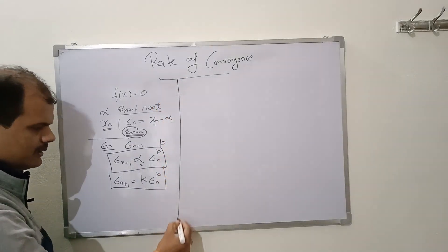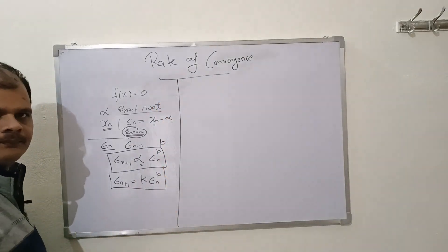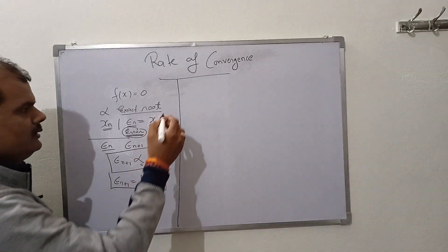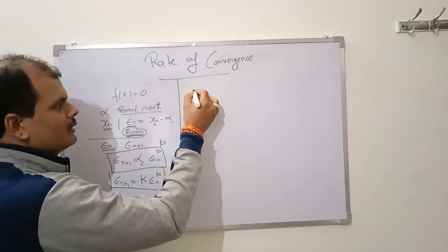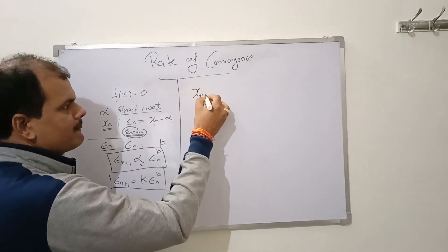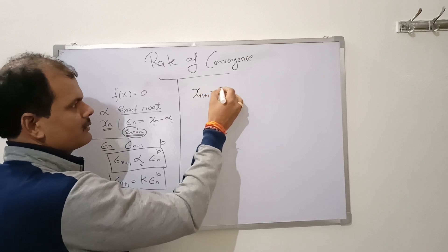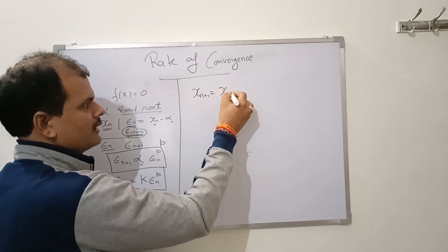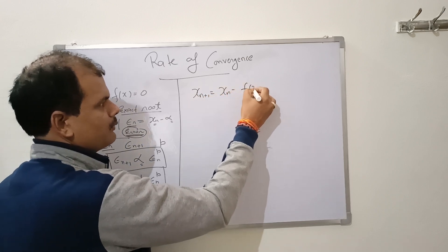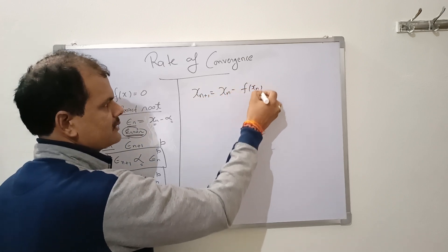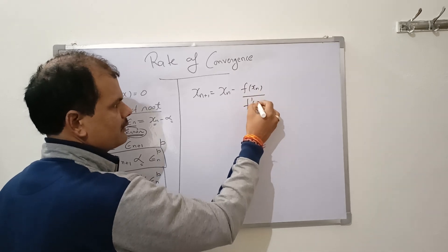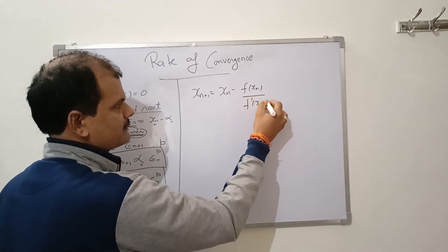Let us now look at Newton-Raphson method. The iterative formula is: x_(n+1) = x_n minus f(x_n) divided by f'(x_n).